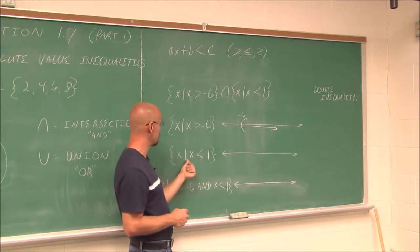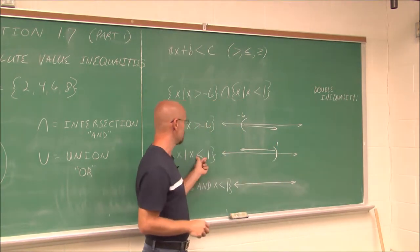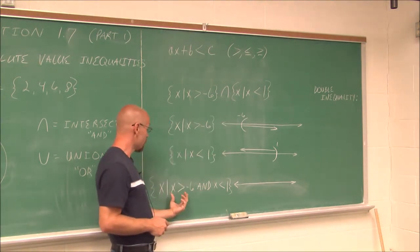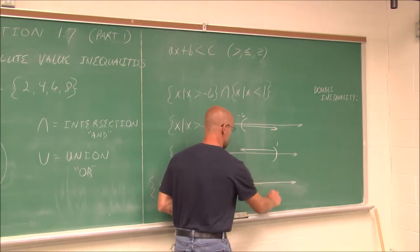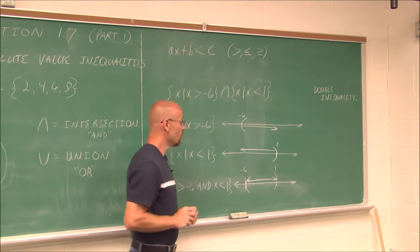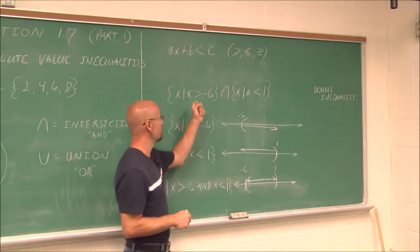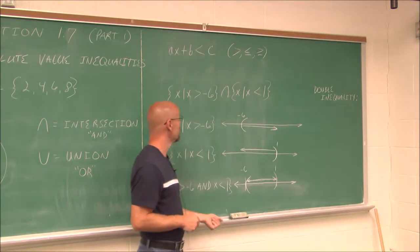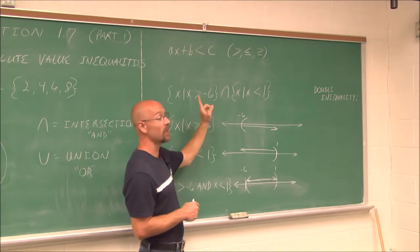If we look at the first set — X such that X is greater than negative 6 — on a number line we place negative 6 with a parenthesis because it does not include the endpoint, and any value to the right is greater than negative 6. For the second set, X is less than 1: we place 1 with a parenthesis. A test point like 0 satisfies both: 0 is greater than negative 6 is true, and 0 is less than 1 is also true.